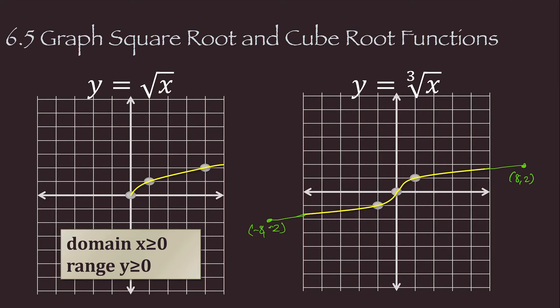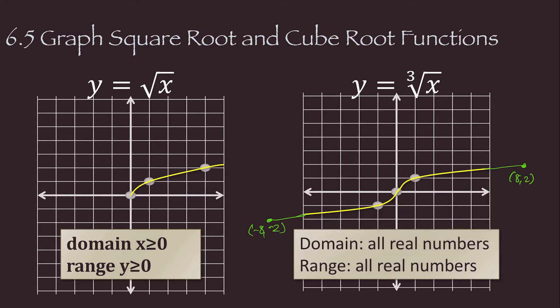And that one goes left and right, whole thing. So the domain is all real numbers, and it will continue going up and down, so the range is all real numbers. You need to know the general shapes of those graphs.